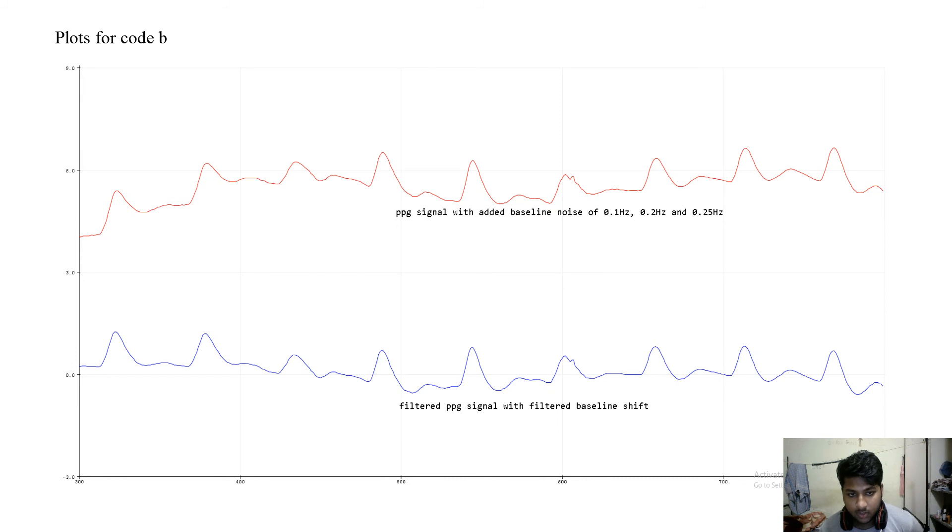This is the plot for B and as you can see this is the PPG signal with added baseline noise of 0.1, 0.2 and 0.25 Hz. And the below signal is the filtered PPG signal with a filtered baseline shift.